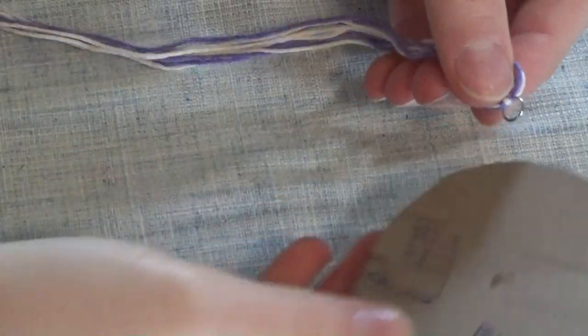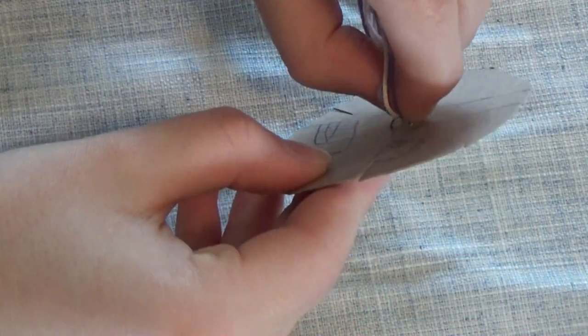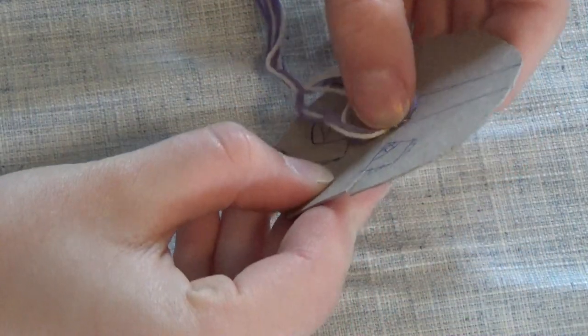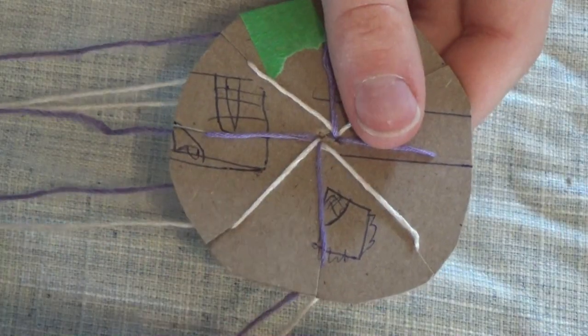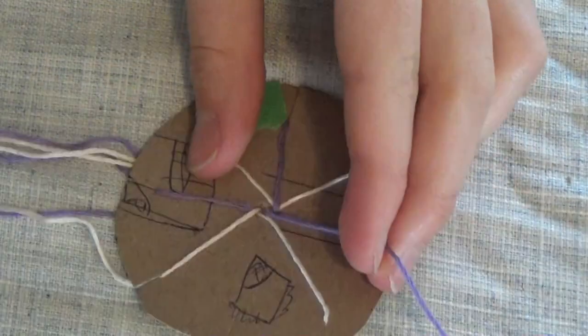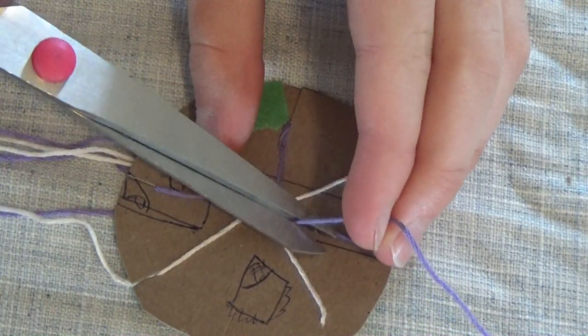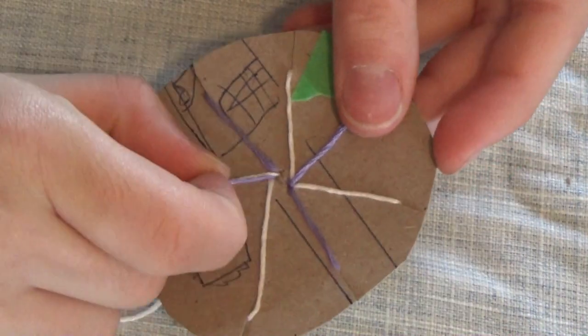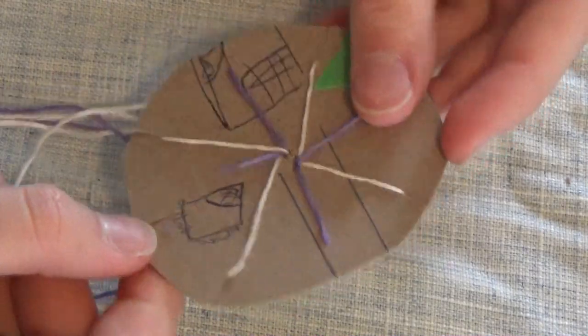Then you're going to push the jump ring into the hole we made in the circle, and then after that you can evenly distribute the pieces of string into each notch. You just need to cut one of the strings because we only need 7 of them, not 8. So you should have something like this.